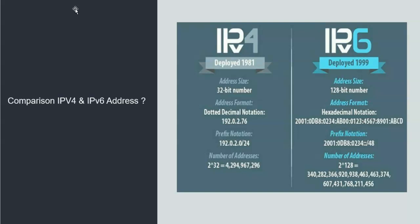IPv4 was designed in 1981 and IPv6 in 1999. IPv4 is 32-bit and uses decimal notation, while IPv6 is 128-bit and uses hexadecimal — alphanumeric — notation. IPv4 provides 2 to the power of 32 IP addresses, while IPv6 provides 2 to the power of 128, which is a huge number — approximately 2 trillion trillion IP addresses available.